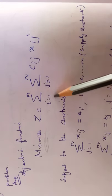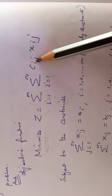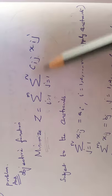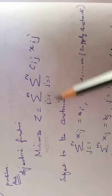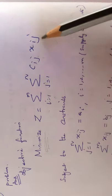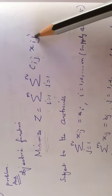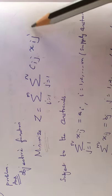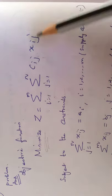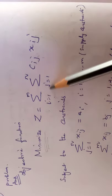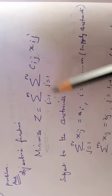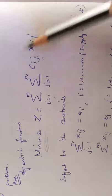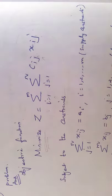Expanding the objective function: put i=1, j=1 giving c₁₁·x₁₁, then c₁₂·x₁₂, and keep going. The expansion continues for all values of i and j. This is the short mathematical form of the objective function.